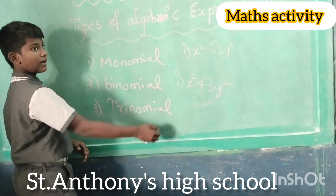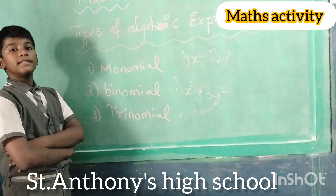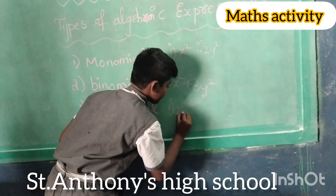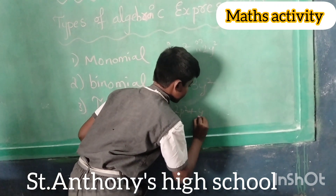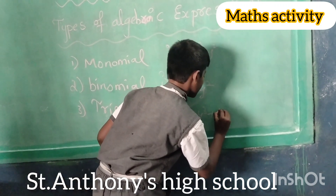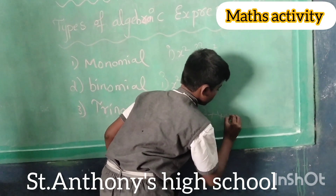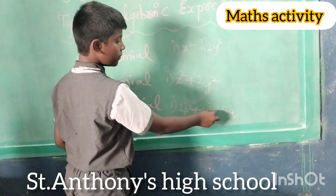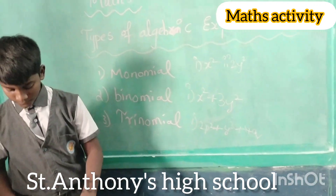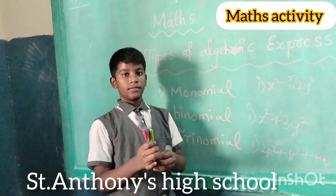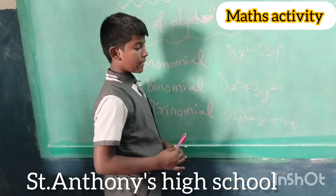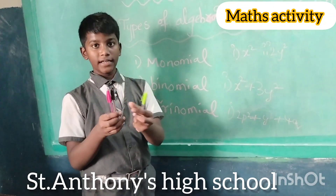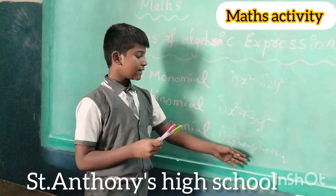The third one is Trinomial. Trinomial is nothing but 3 unlike terms. Just like these three different pens — one green pen, one brown pen, and one pink pen. These are different pens.